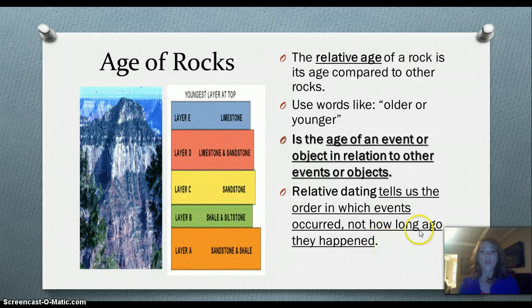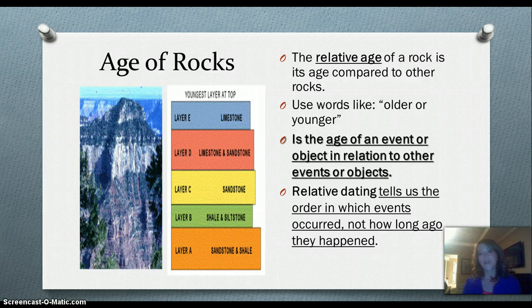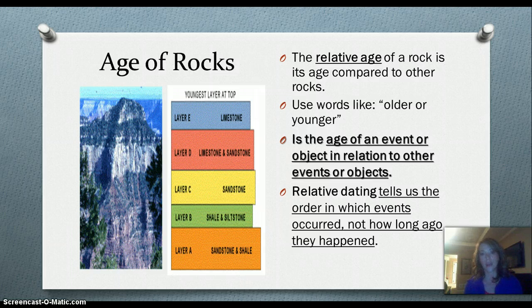The relative age of a rock is its age compared to other rocks — just like we compare the ages of my kids and say this one's the oldest, this one's the youngest, this one's somewhere in between. Scientists do the same thing with rocks. They use words like this one's older, this one's younger, giving the age of the rock layer in relation to the things around it, not giving an exact age. It will tell them the order that those layers were deposited in, but not exactly how long ago they happened. Now there are some ways that they can figure out an exact age, and we're going to talk about that in another lesson.